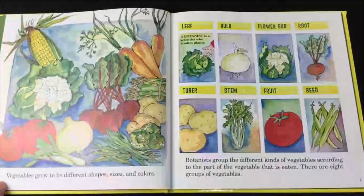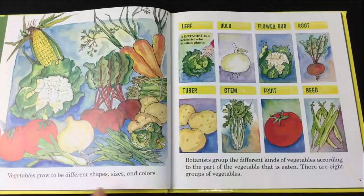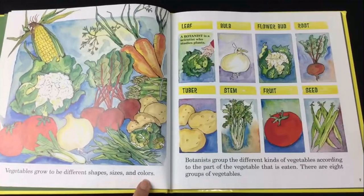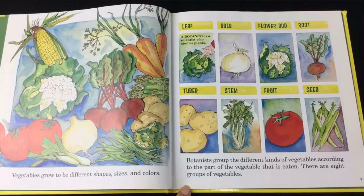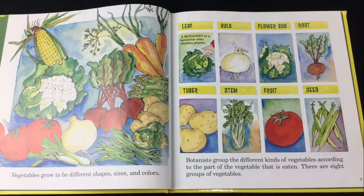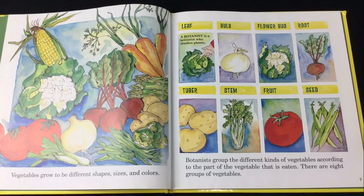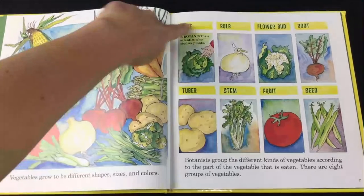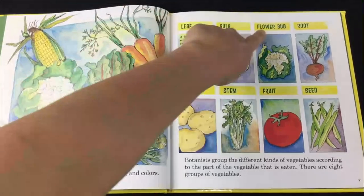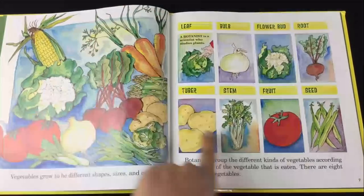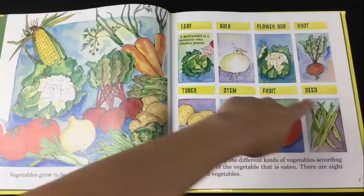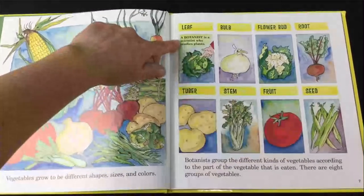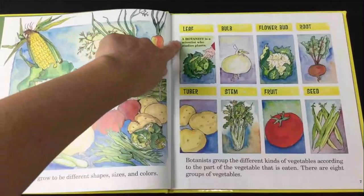Vegetables grow to be different shapes, sizes, and colors. Botanists group the different kinds of vegetables according to the part of the vegetable that is eaten. There are eight groups: leaf, bulb, flower bud, root, tuber, stem, fruit, and seed. A botanist is a scientist who studies plants.